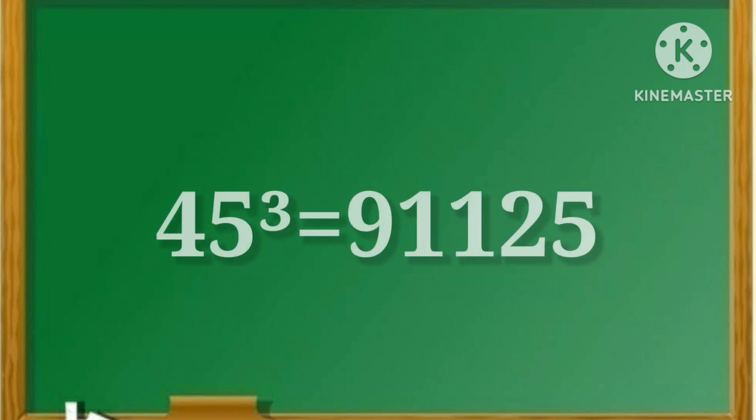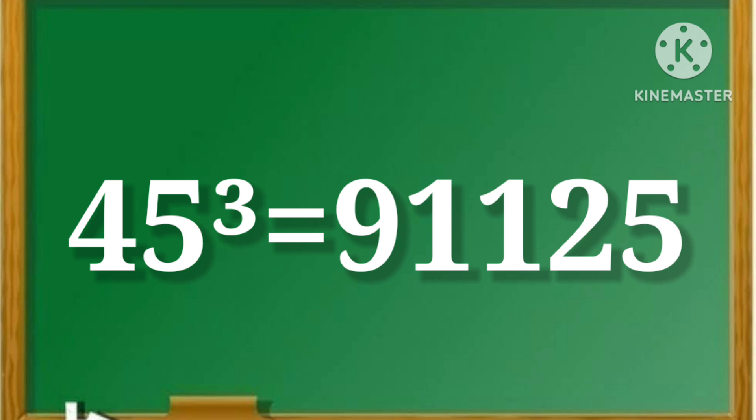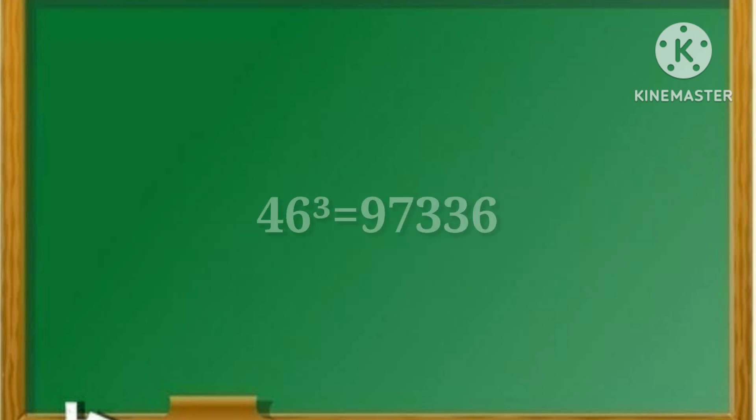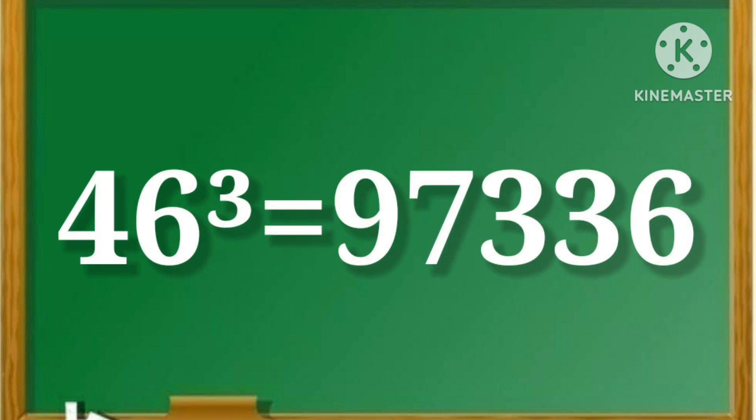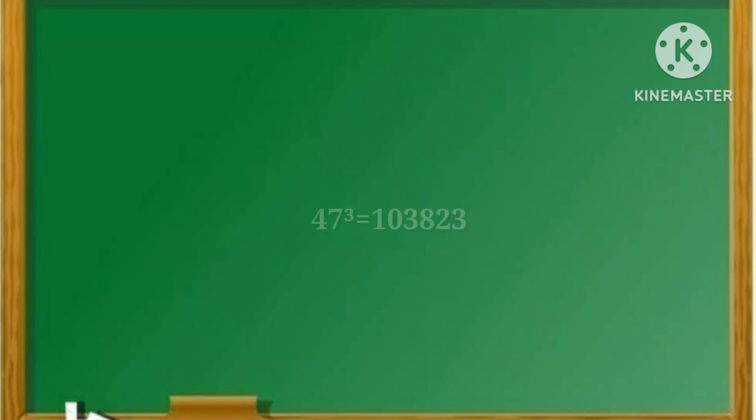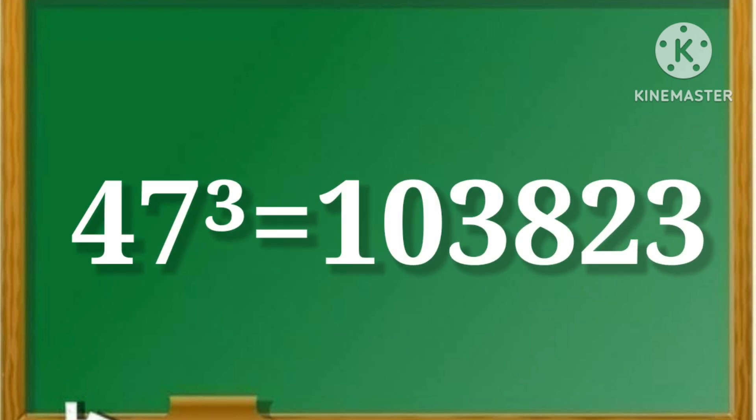45 cube is equal to 91,125. 46 cube is equal to 97,336. 47 cube is equal to 1,03,823.